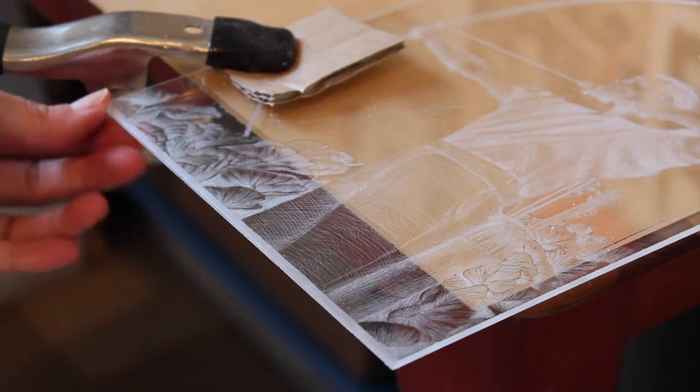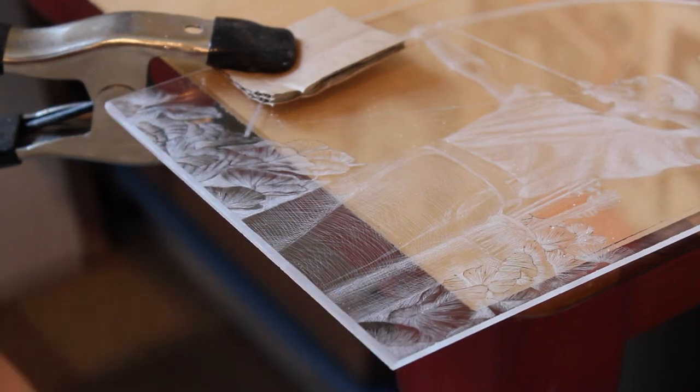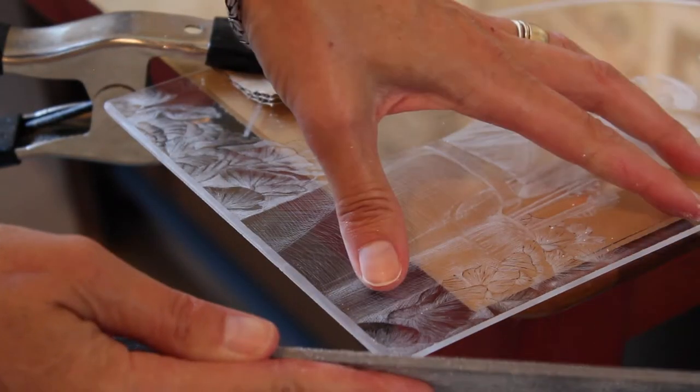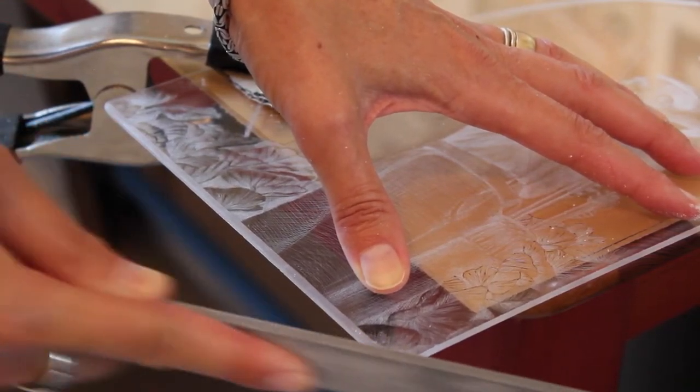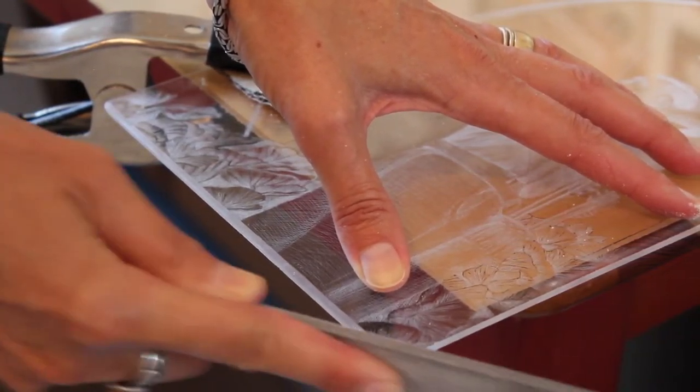Put a tarp or an old towel underneath your work area to catch the shavings and begin beveling as shown here by taking your double cut file and holding it at a 30 to 45 degree angle from the top surface of the plate.